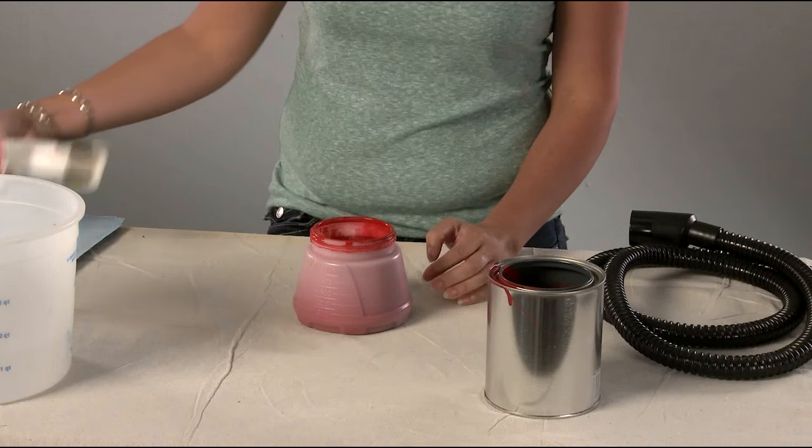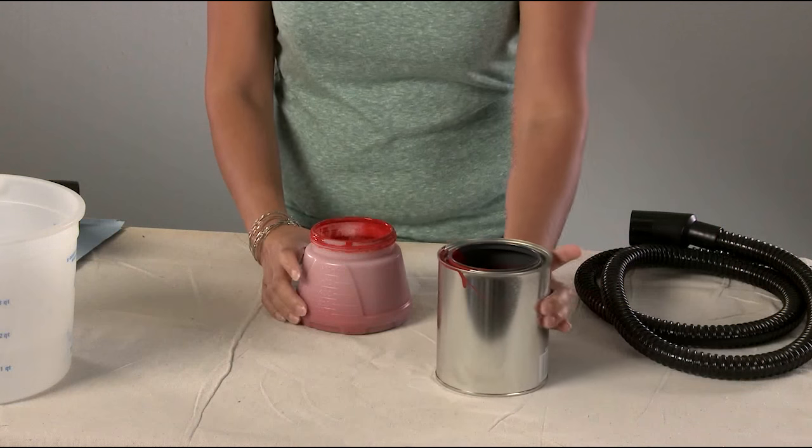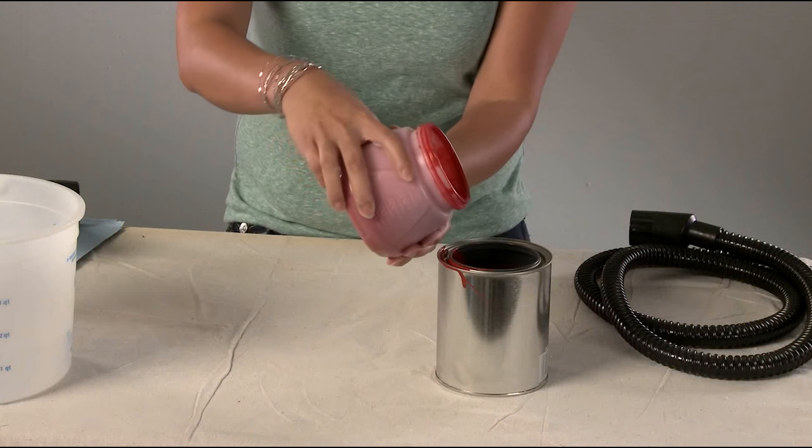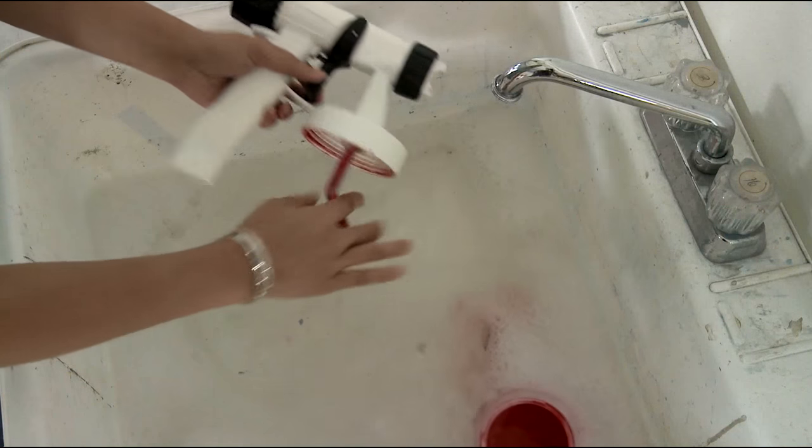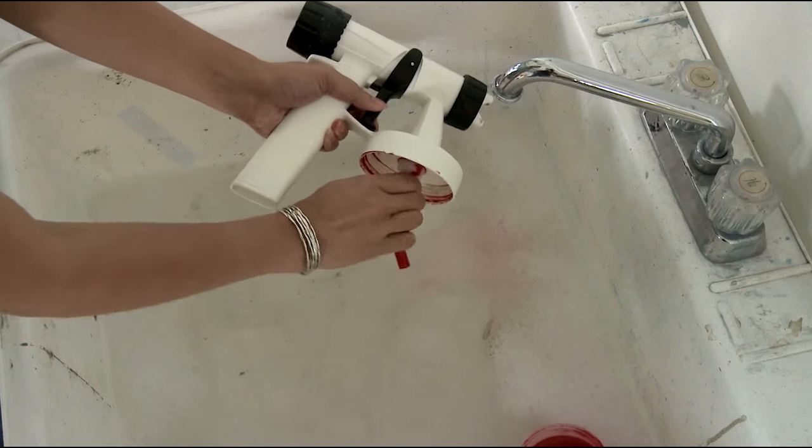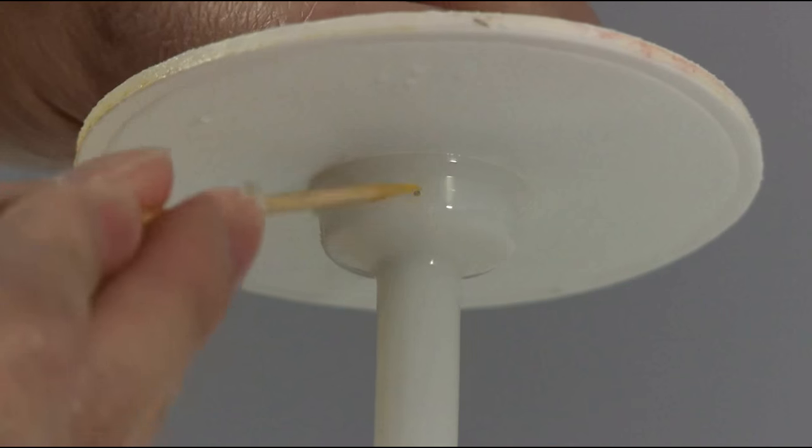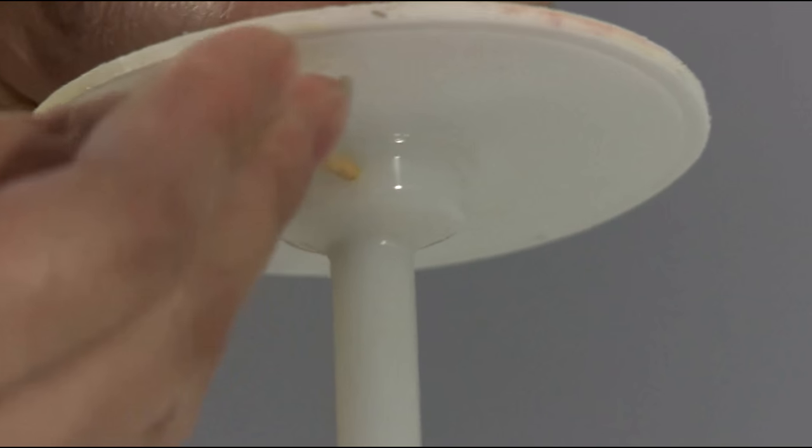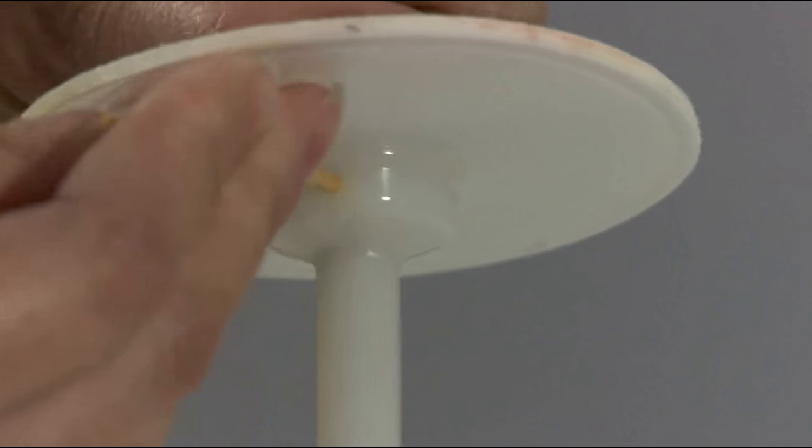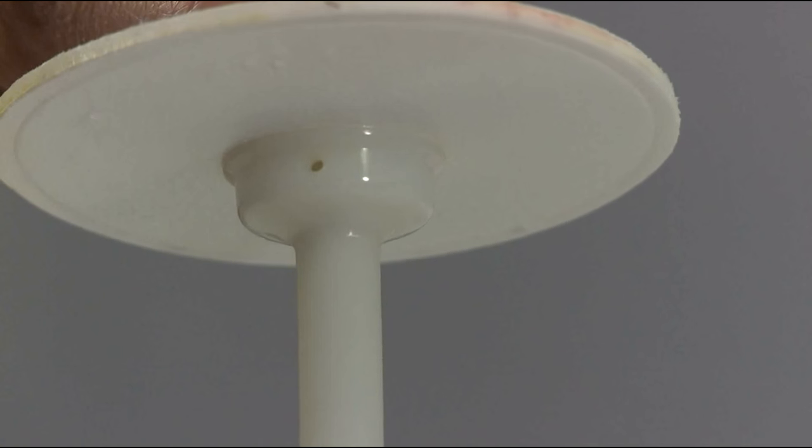Next, clean the cup and suction tube in the sink. Empty any remaining material back into your material container. Make sure to clean the vent hole on the suction tube with a toothpick. If the hole is plugged, the spray will be poor or stopped altogether.